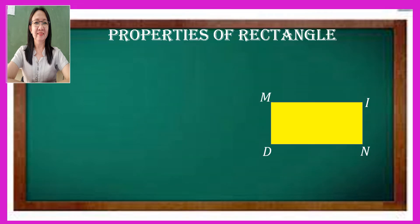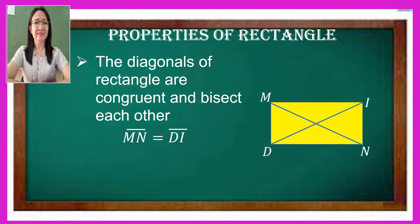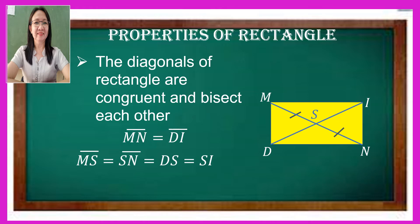Another property of rectangle is about the diagonals. They are congruent and bisect each other. Diagonal MN is equal to diagonal DI, and where they intersect at point S, MS is equal to SN, SN is equal to DS, and also equal to SI.